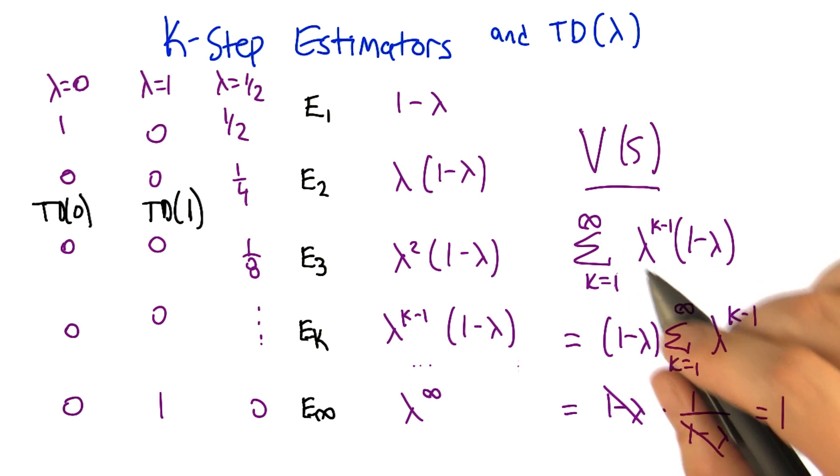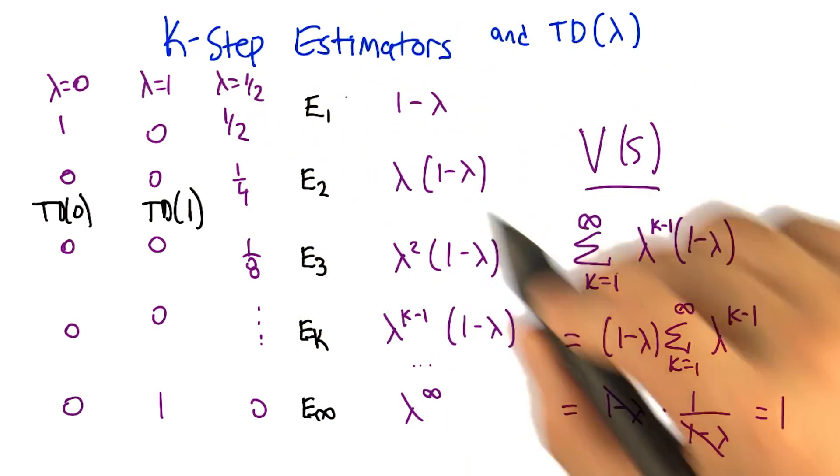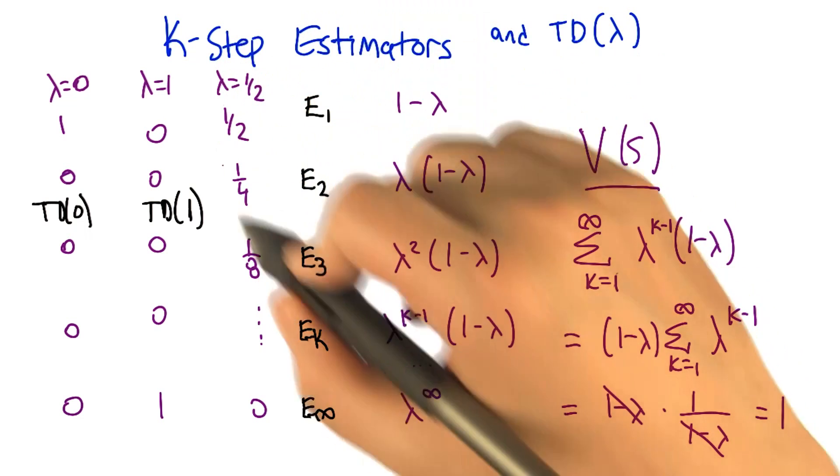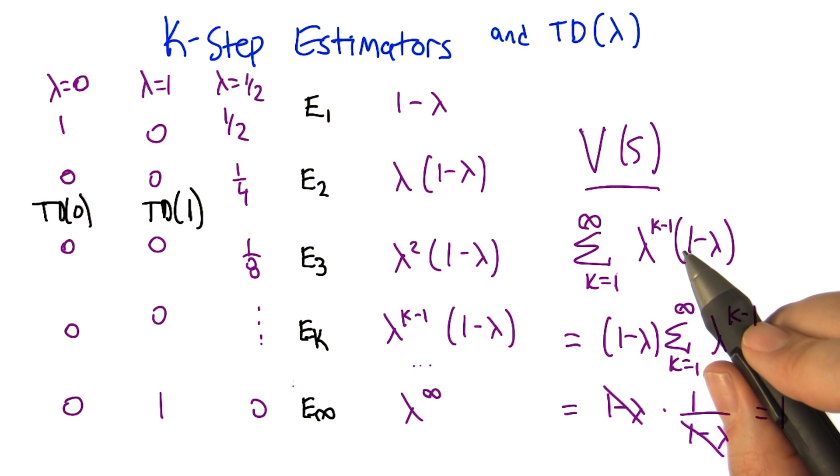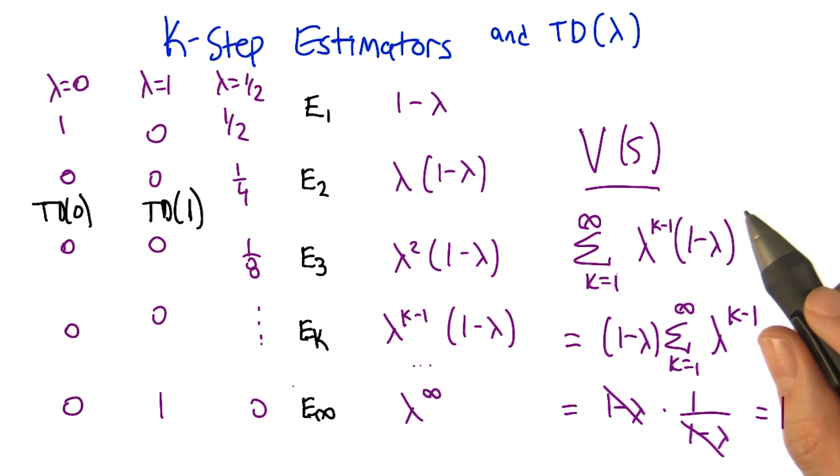All right, so now, given that we don't actually have a crisp characterization of what something like lambda equals a half really gives us in words, why do we care about these intermediate values? So I'm going to make a transition and talk about next what happens empirically when you use TD lambda.